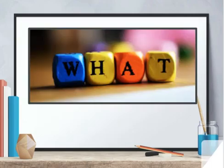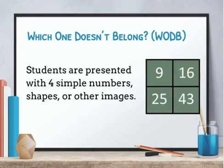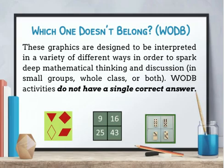Those are the benefits, but let's clarify what exactly Which One Doesn't Belong is. It's a simple, short routine that has power in creating a community of thinkers, reasoners, listeners, and justifiers — really a great community builder. This routine includes four simple numbers, shapes, or other images. They can't just be randomly selected; the four things are designed to be interpreted in a variety of ways to spark deep mathematical thinking and discussion.